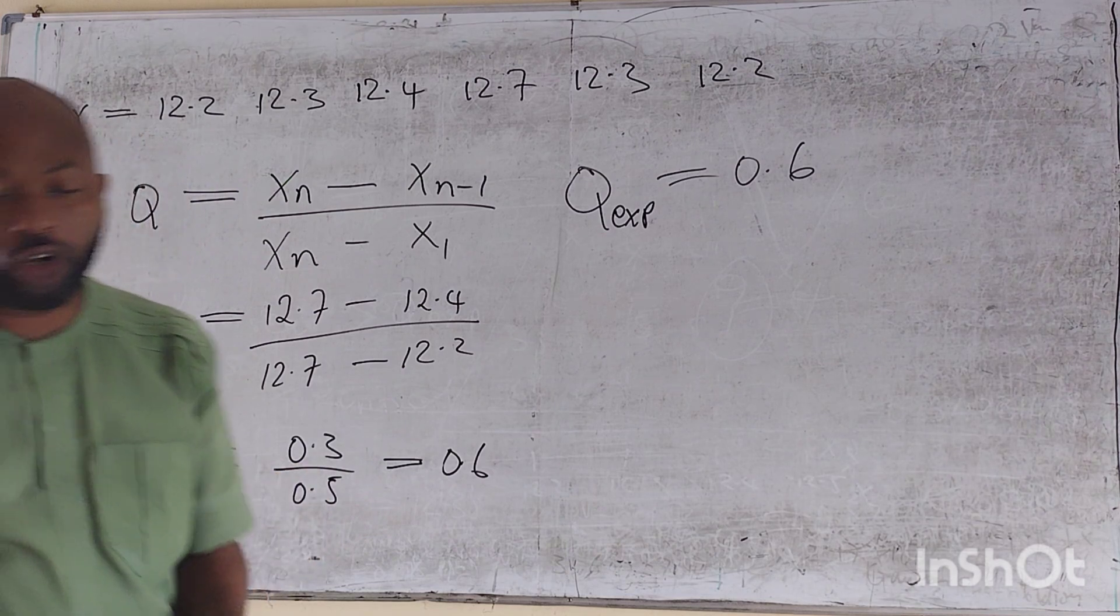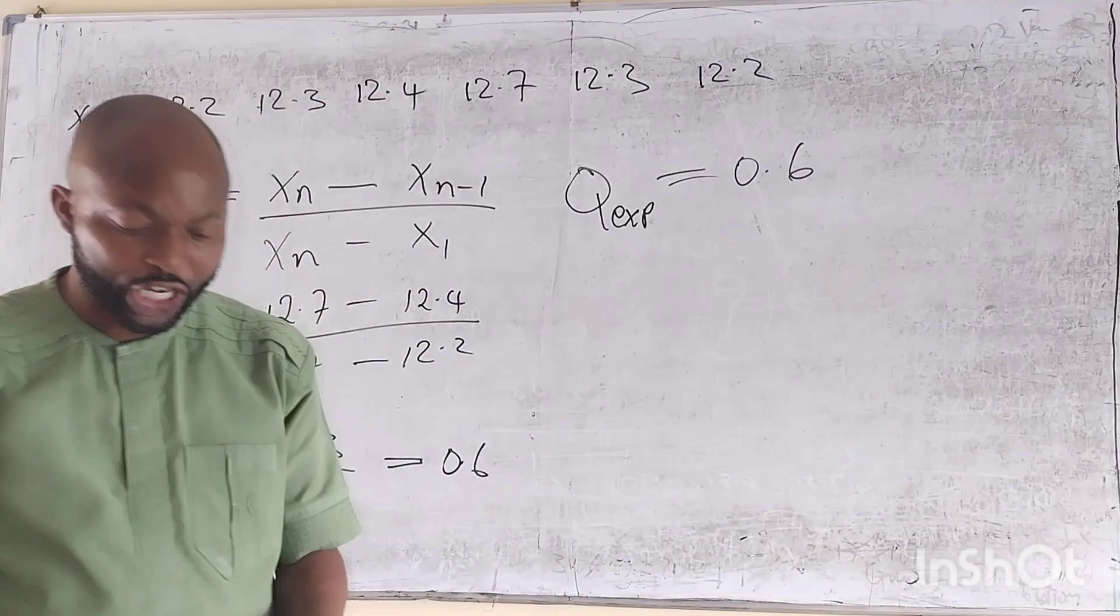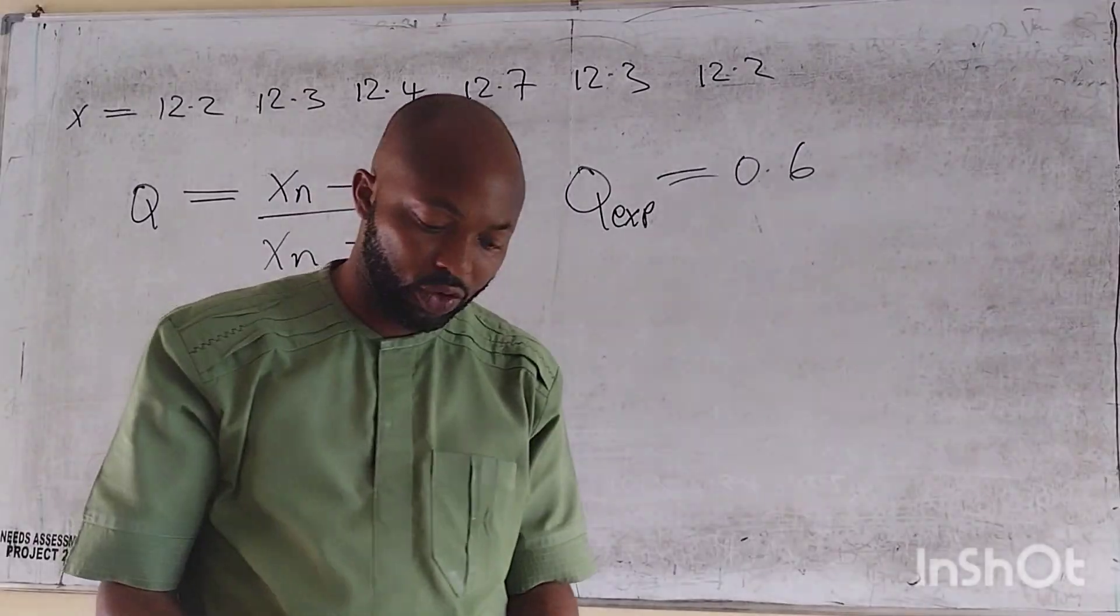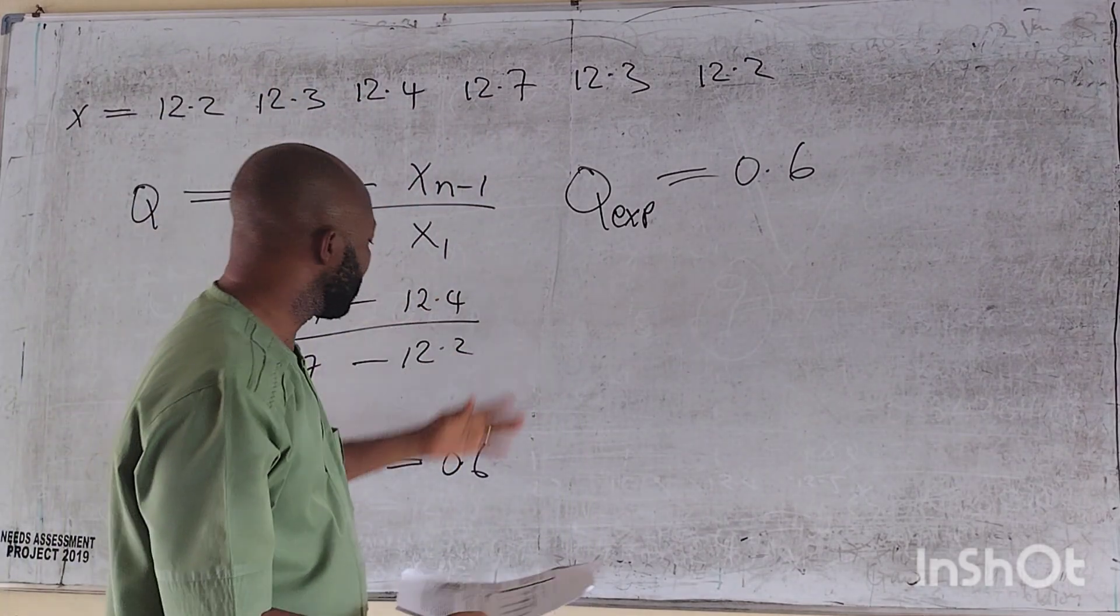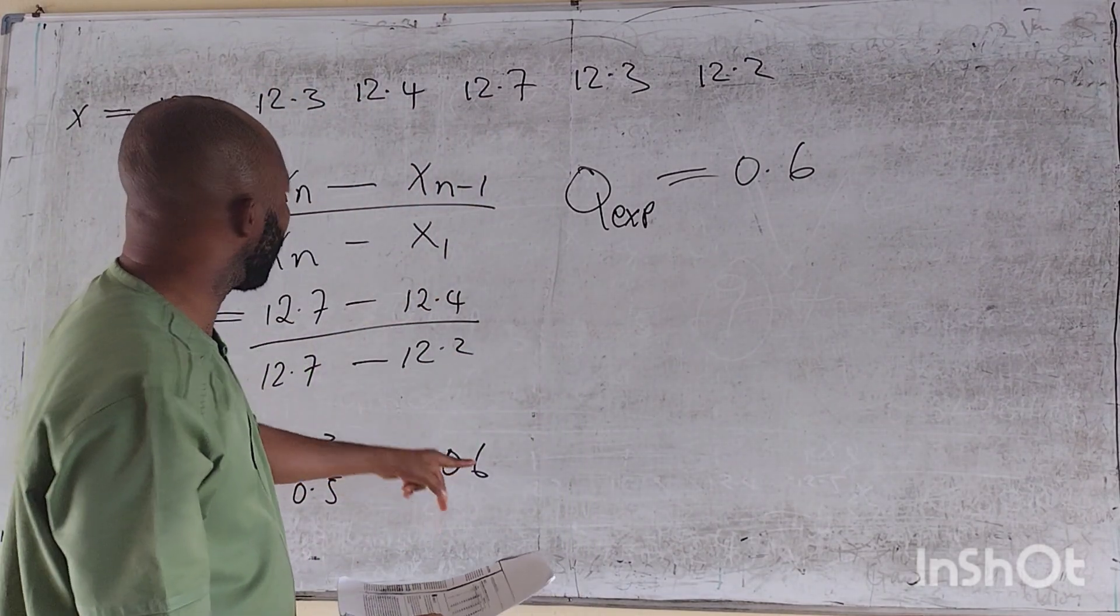This equals 0.3 divided by 0.5. This is equals to 0.6. So now I have my Q-experiment to be 0.6. Now I will have to look from the rejection portion, which is the Q-critical, the value for this 0.6.